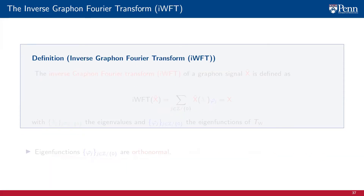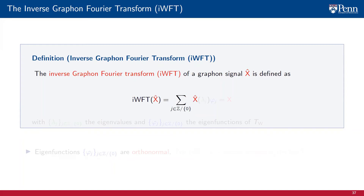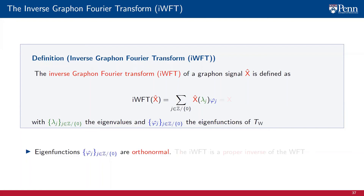Naturally, we next define an inverse graphon Fourier transform that maps signals defined on the graphon shift operator's basis back to the original domain. The inverse graphon Fourier transform, or IWFT, of a graphon signal x-hat can be defined as the sum over the countable indices j of the product between the component of x-hat corresponding to the eigenvalue lambda_j and the associated eigenfunction phi_j — with lambda_j the eigenvalues and phi_j the eigenfunctions of the associated graphon shift operator TW. Since the eigenfunctions phi_j form a complete orthonormal basis of L2, the inverse graphon Fourier transform retrieves the original graphon signal x without loss of information. Hence, the IWFT is a proper inverse of the graphon Fourier transform.